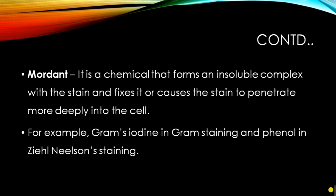The next component is the mordant. A mordant is a chemical that forms an insoluble compound or complex with the stain and fixes it, or causes the stain to penetrate more deeply into the cell. The mordant acts with the primary stain to form a dye-mordant complex, which penetrates more deeply into the cell. Examples of mordants include Gram's iodine used in Gram staining, and phenol used in Ziehl-Neelsen or acid-fast staining.